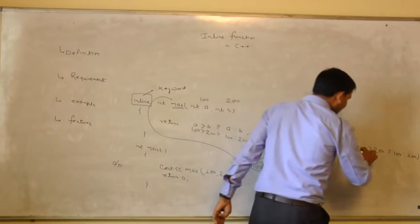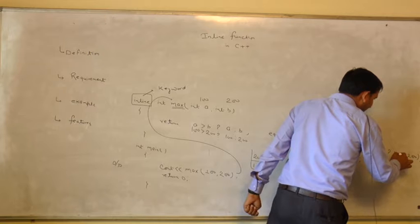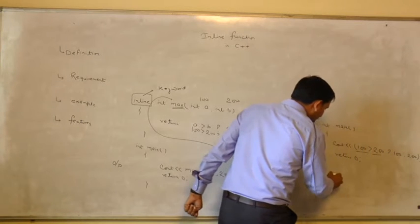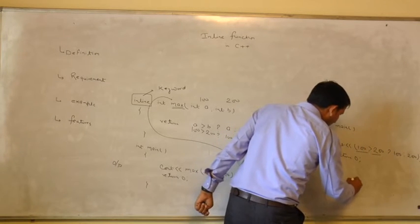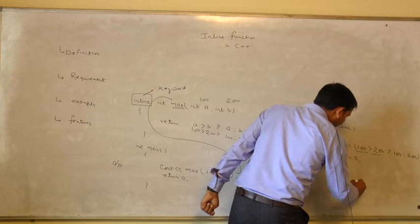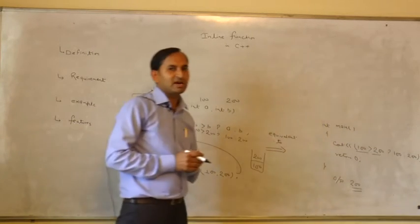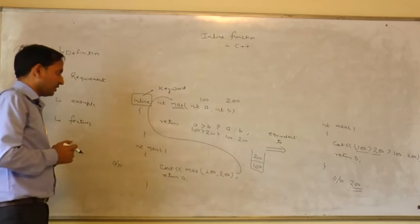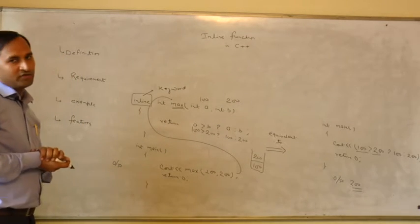Here, 100 greater than 200 question mark 100 colon 200. The output will be 200. So this process is much much faster compared to normal program. This is very key concept of inline function.